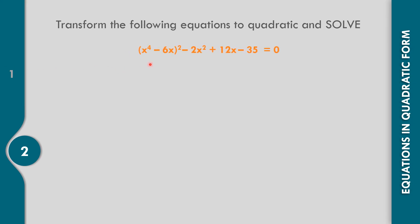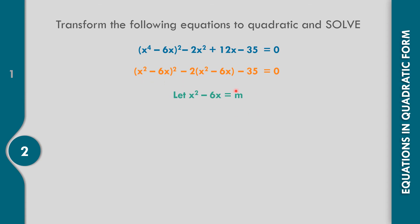Now for example 2: x⁴ - 6x² - 2x² + 12x - 35 = 0. Let us transform this to quadratic form and solve. We regroup: (x⁴ - 6x²) + (-2x² + 12x) - 35. The common factor of -2x² and +12x is -2, giving x² and -6x. So we let m = x² - 6x, and the equation becomes m² - 2m - 35 = 0.